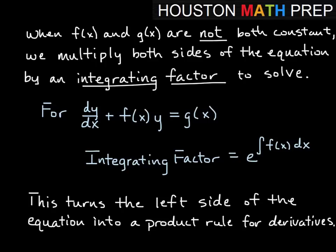The big idea for linear equations — rather than just turning them into separable equations — is that whenever we can't simply separate, we use what's called an integrating factor. We find an integrating factor based on f(x), multiply the entire equation through by it, and the left-hand side becomes a product rule for the derivative of something. This lets us integrate the left-hand side nicely. The integrating factor is e to the power of the integral of f(x) dx, and we leave off the constant of integration when finding it.